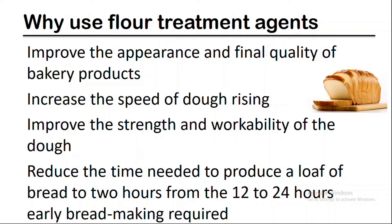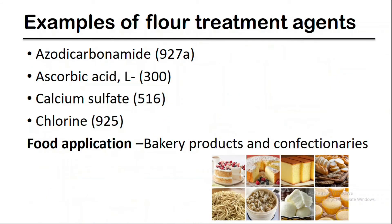Flour treatment agents can also increase the speed of dough raising, improve the strength and workability of the dough, and reduce the time needed to produce a loaf of bread to 2 hours, from the 12 to 24 hours that early bread making required. Azodicarbonamide, ascorbic acid, calcium sulphate, and chlorine are some examples of flour treatment agents. Bakery products and the confectionery industry use flour treatment agents in their processing.